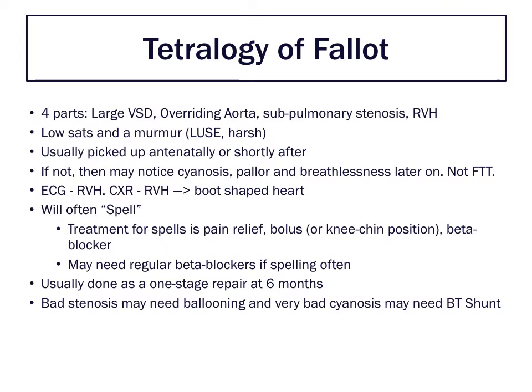The tetralogy of Fallot has four parts - hence tetralogy - and they are easier to remember in two duologies. First, you have a large VSD, so blood can go across from one side of the heart to the other. You might naturally think the blood would go from left to right, but for various reasons there is actually preferential flow in the other direction.